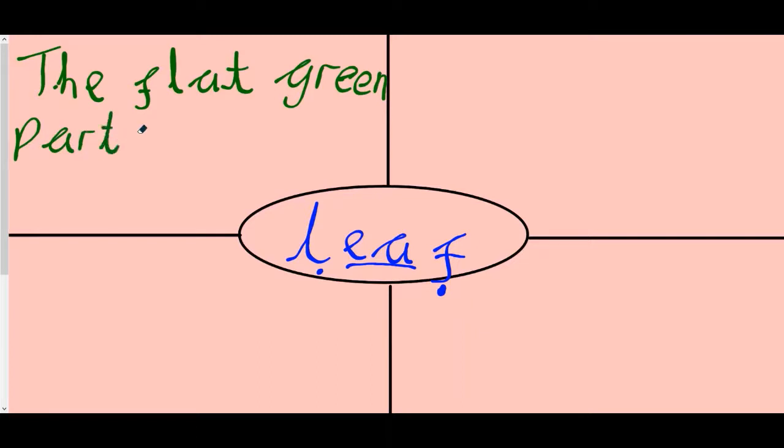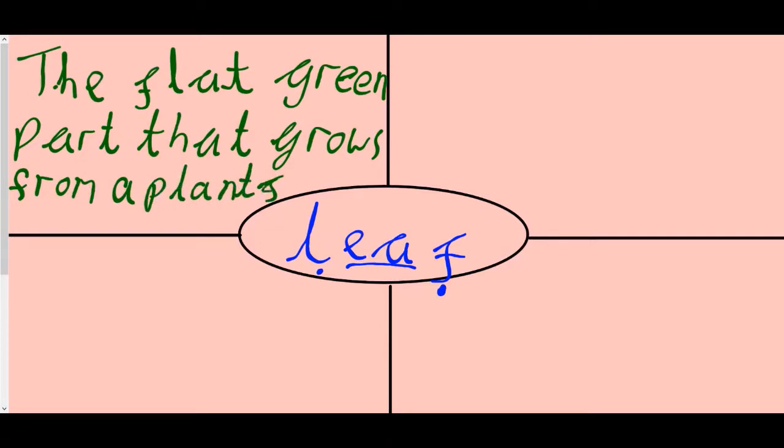The leaf is a flat green part. So the flat green part that grows. Where do you think it grows? Where does it grow from? It grows from plants. The flat green part that grows from a plant stem.